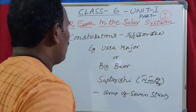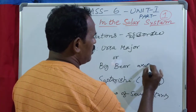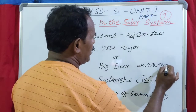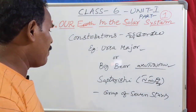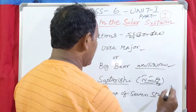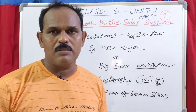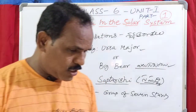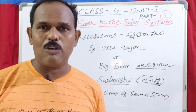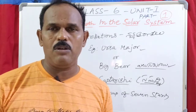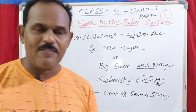Ursa Major is a constellation, also known as the big bear. One of the most easily recognizable constellations is Saptarshi, also called Saptarshi Mandala. In Saptarshi Mandala, we have a group of seven stars.